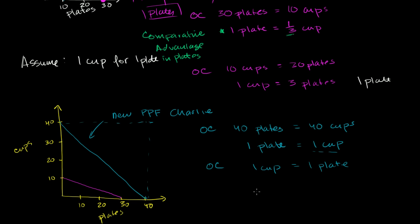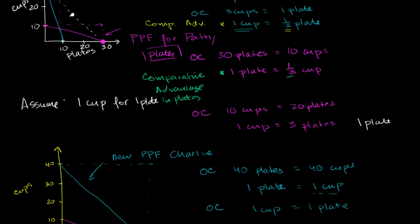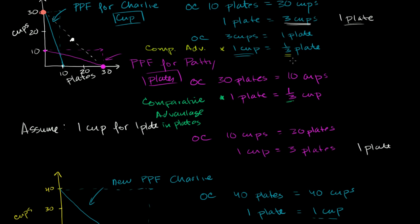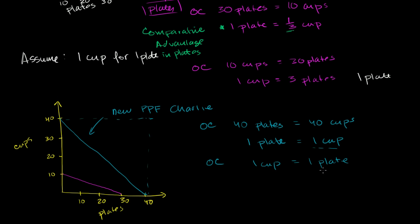If we look at the opportunity cost in cups, the opportunity cost for Charlie to make one cup is one plate — actually a little bit worse than before, but he's just overall more productive. His opportunity cost for one cup is one plate now, whereas before he was giving up one-third of a plate. But his opportunity cost for producing a cup is still cheaper than Patty's: her opportunity cost for a cup is three plates, while his is only one plate. So he still has the comparative advantage in cups, and Charlie should still specialize in cups.